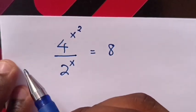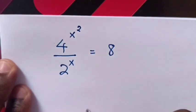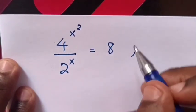Hello. To solve this exponential equation 4 to the power x squared over 2 to the power x equals 8, find the value of x.